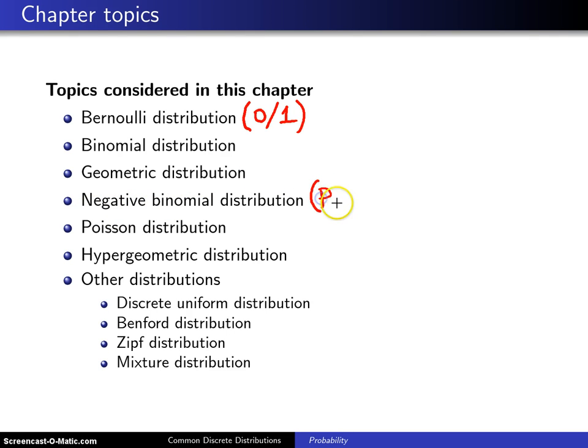Some of these distributions have multiple names. For example, the negative binomial distribution is also known as the Pascal distribution. There is not always one name associated with some of these distributions.